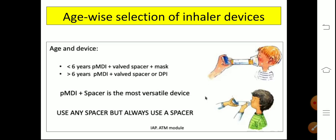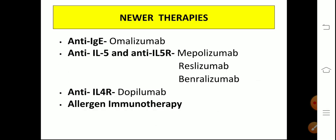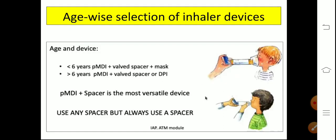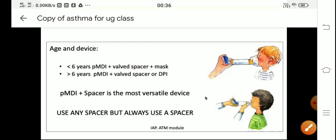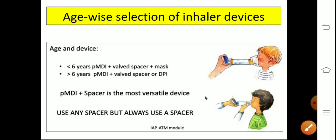In children less than six years, you have to use a pressurized MDI with a spacer with a mask. In children more than six years, use a spacer with an MDI — always use a spacer. You can also use DPIs in patients more than six years of age. Nebulizers may be required in patients less than three years of age who cannot coordinate. Use any spacer, but always use a spacer.